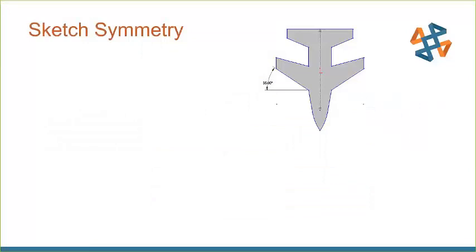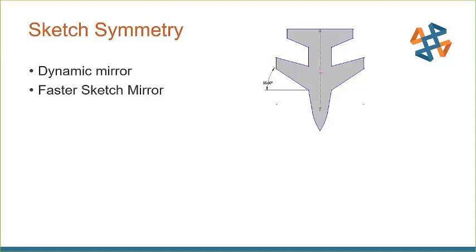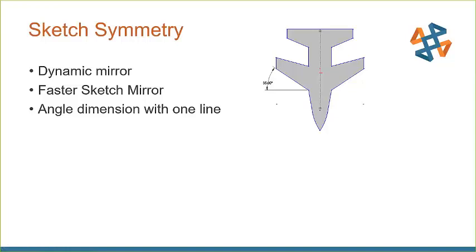The next example is sketch symmetry, which falls into the category of design intent. One of my favorite sketching commands is Dynamic Mirror. I'll also show ways to use the regular mirror command but speed that process up — there are a couple of shortcuts. And what about angle dimensions? I have a 35-degree angle but no horizontal line to dimension to. Let's jump into SolidWorks and you'll see why I am an application engineer and not an aerospace engineer when I draw that airplane profile.